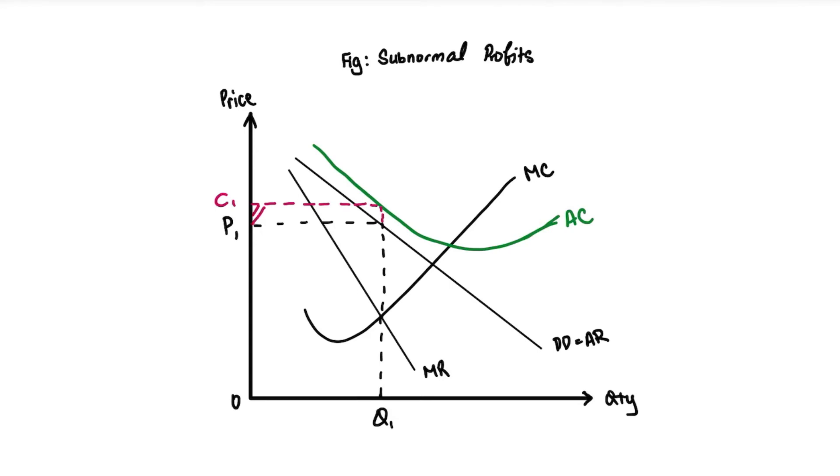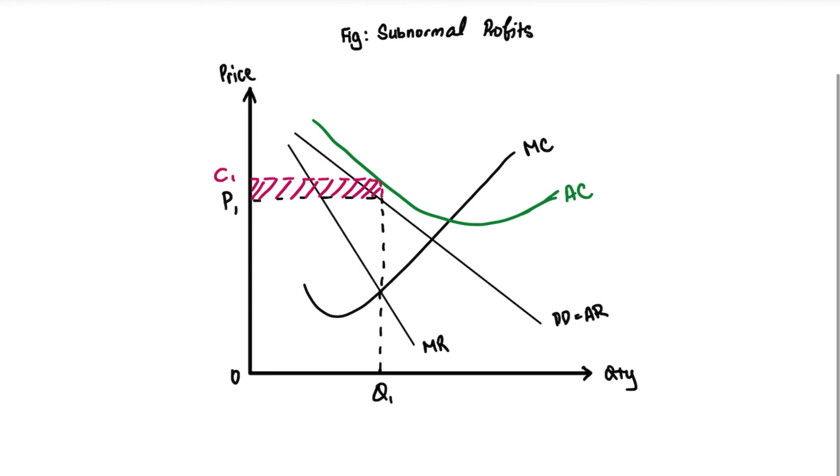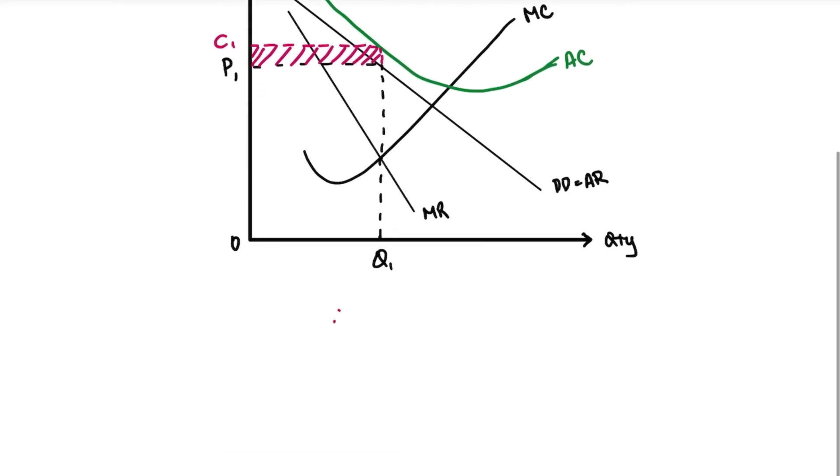And you realize that C1, this shaded area, is basically our subnormal profits. You realize that C1 is more than P1. It shows that our cost is actually more than our price - our average cost is more than our price.